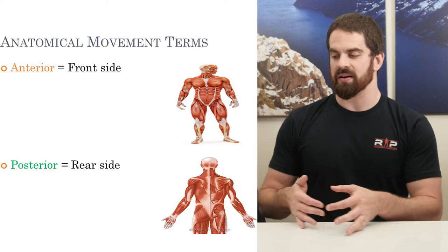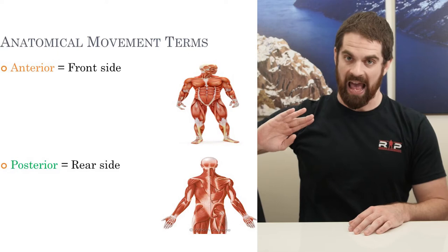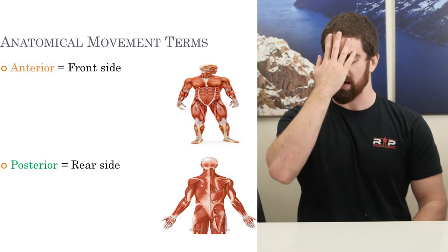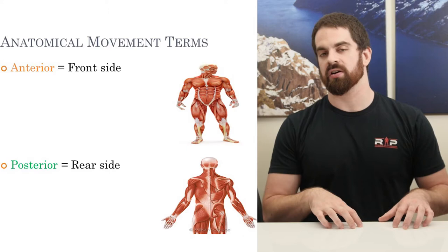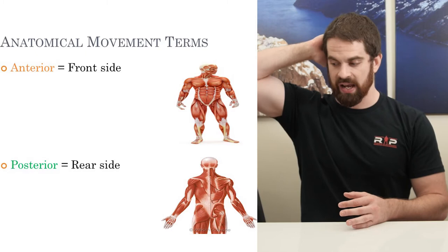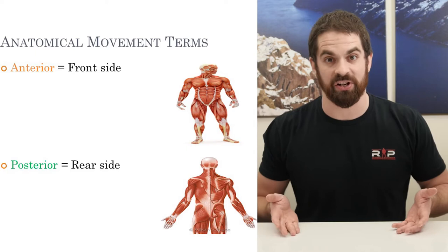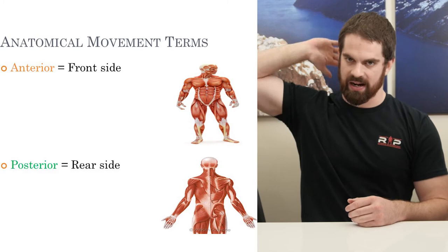Next is anterior versus posterior. We're imagining cutting the body into front and back halves. Anterior refers to the front half — the side with your face, stomach, and quadriceps. Posterior refers to the rear side — the back of the head, back muscles, glutes, and hamstrings, which is why it's often called the posterior chain. Anterior is the front side, posterior is the back side.